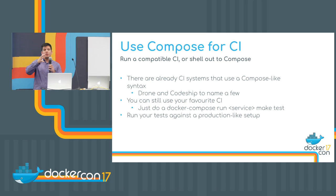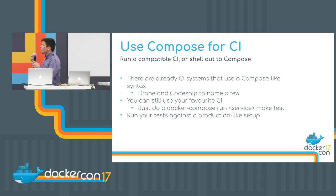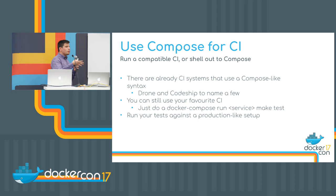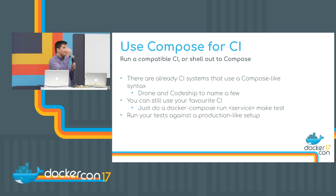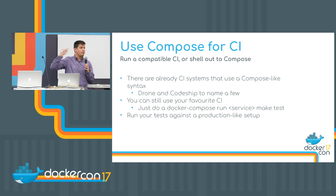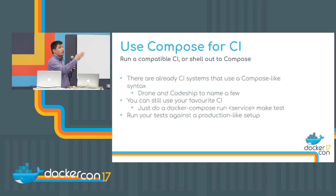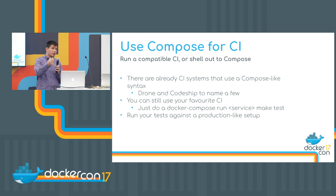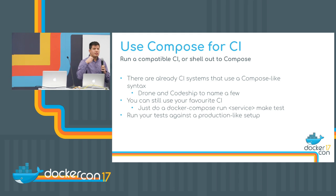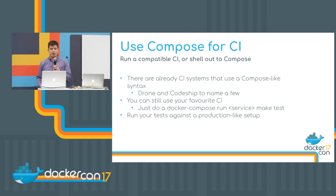Once your Docker Compose and docker-compose.override files are in place and your development workflow is set up, you can move to CI. Either use CI systems that already support Docker Compose — like Drone or CodeShip — where you can take the same Compose file and transform it slightly for their format, or use any other CI system and simply run docker-compose run web to run your test suite inside Docker Compose. It's really easy and important to have the same stack at all stages.